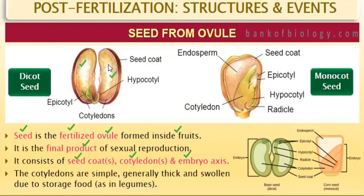Consider rajma and rice seeds. We cannot open a rice grain — rice grains are monocot seeds. But chickpeas and peas (mutter) can be divided into two equal parts — those two parts are the two cotyledons. A seed with two cotyledons is known as a dicot seed. Wheat and rice, on the other hand, are monocot seeds. Thus, angiosperms produce two types of seeds: dicot and monocot.